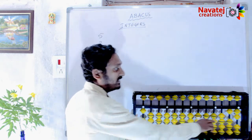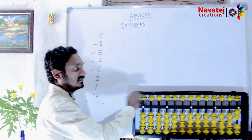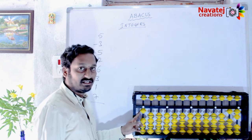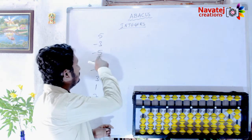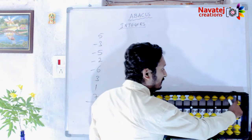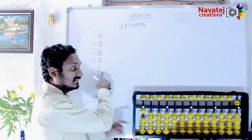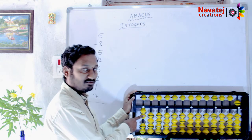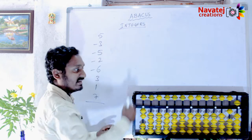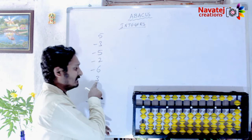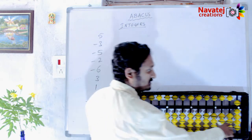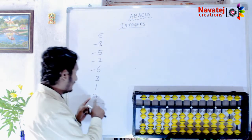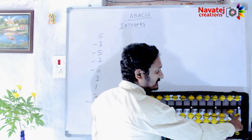Minus 5 is possible — minus 5 equals minus 10 plus 5, apply that formula. Then after minus 2 — minus 2 is possible. Then after minus 6 — only 5 is available, so 5 minus 6 is not available. Take one more borrow, so minus 6 equals minus 10 plus 4, apply that. Then after plus 3 — plus 3 equals minus 7 plus 10, apply the formula.